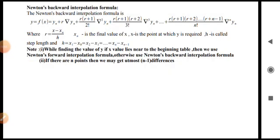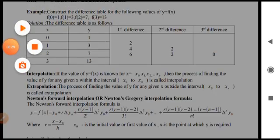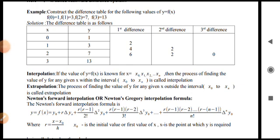Now a very important note for problems: if the x value lies near to the beginning of the table, then we use Newton's forward interpolation formula. If the x value lies near to the end of the table, then we use Newton's backward interpolation formula. In the above example, if I want to find y at x equal to 0.5 we use Newton's forward interpolation formula; if I want to find y at x equal to 2.5 we use Newton's backward interpolation formula.